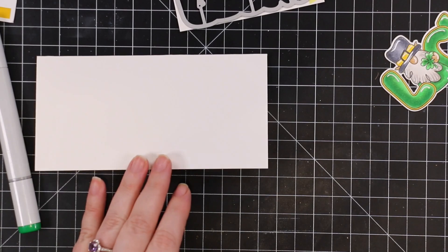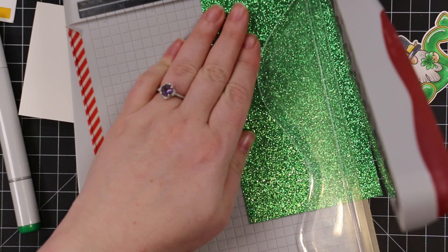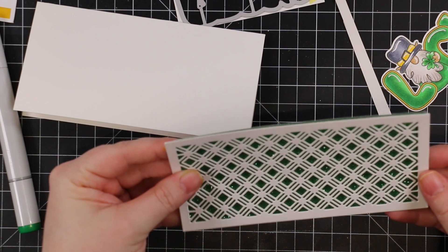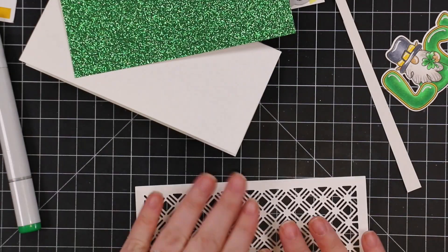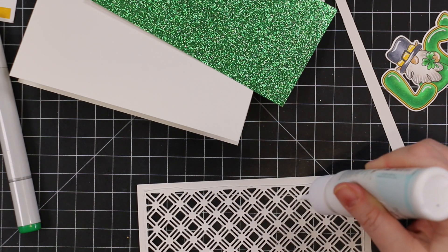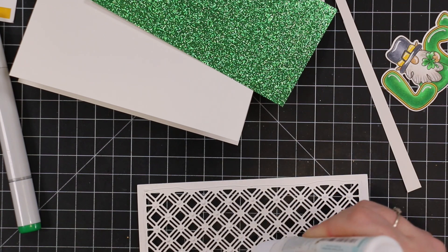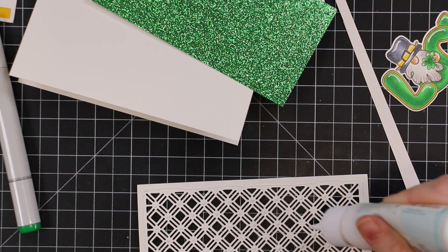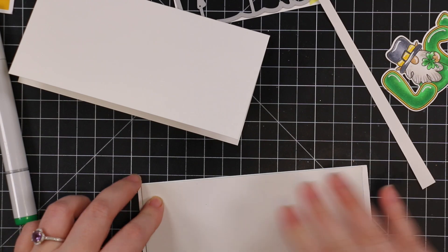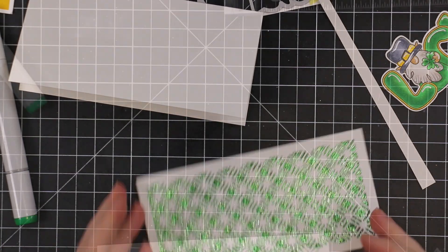I pulled out this Green Valley six by six paper pack from Tonic. I just got it in a recent order and it's beautiful. I trimmed down some of the green glitter paper to put behind the mini slimline lattice die cut. I'm using craft tacky glue because tape runners usually won't adhere to glitter paper.